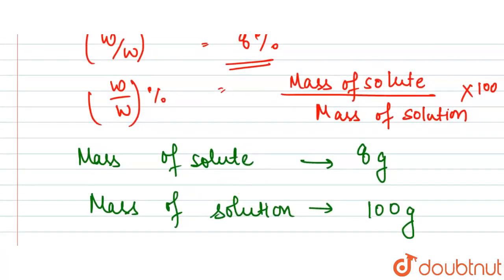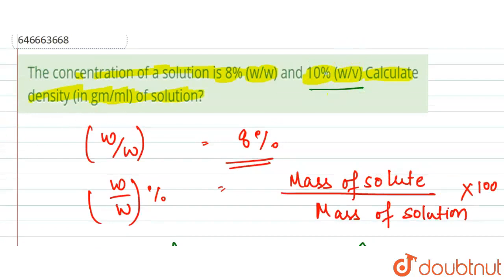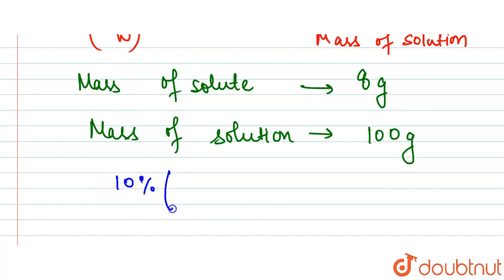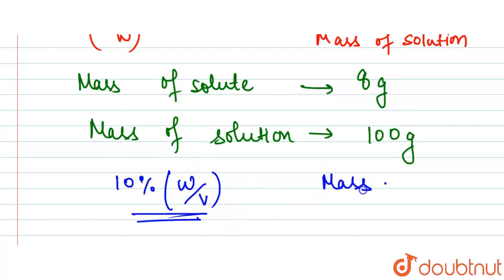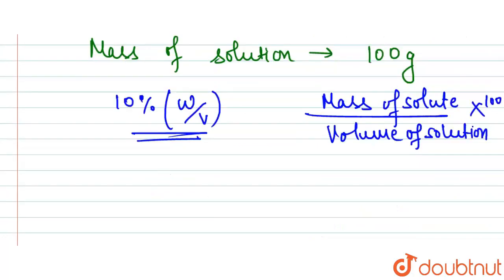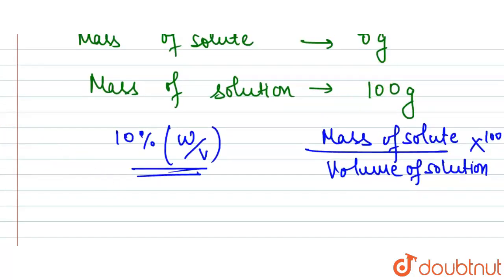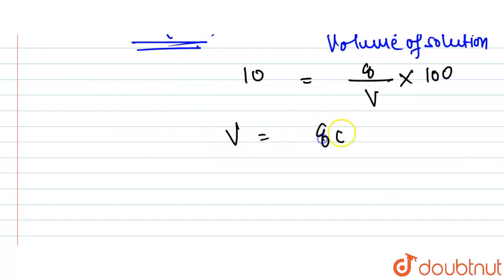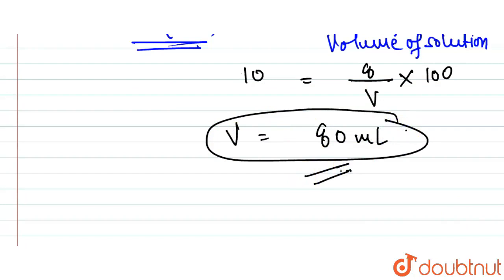Now, the weight by volume is 10 percent. The weight by volume formula gives mass of solute upon volume of solution, multiplied by 100. We already know the mass of solute is 8 grams. So: 10 = (8 / volume) × 100. Solving this, the volume comes out to be 80 milliliters.